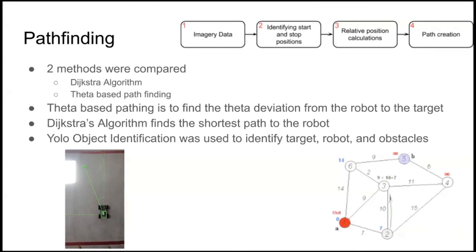With theta-based pathfinding instead, we did not need to use any sort of pathfinding algorithms. We just needed to find out the object and we need to find out the target and the robot and using YOLO object identification, identify the target and identify the robot, figure out its x and y coordinates and find out and identify how much the robot is deviating from the target and what is that theta value for that.